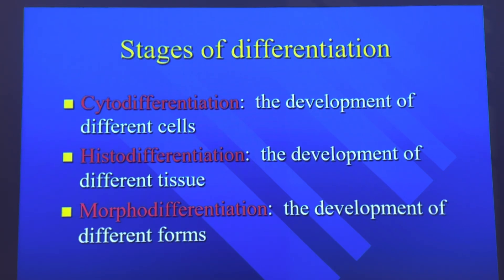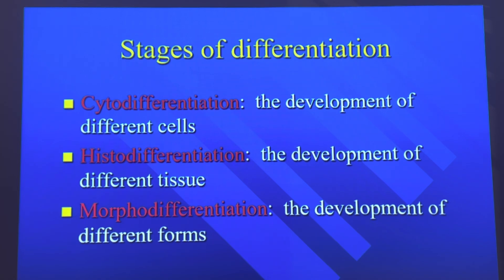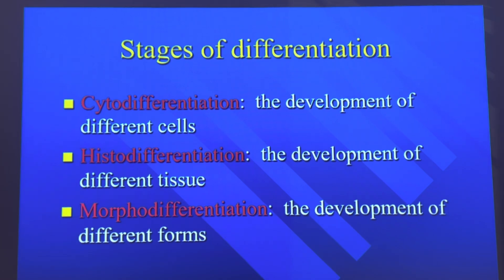Here are the different stages of what we call differentiation. Cyto refers to cells, so you have cytodifferentiation — the development of different cells. Histo refers to tissue, so we have histodifferentiation — the development of different tissues. Morpho is changing shapes — like the Mighty Morphin Power Rangers, they're called that because they change shape — so morphodifferentiation is the development of different forms.